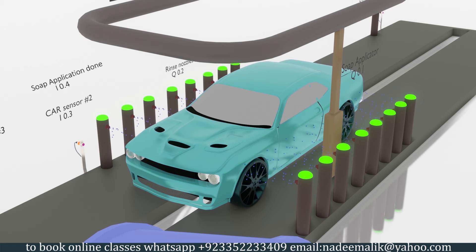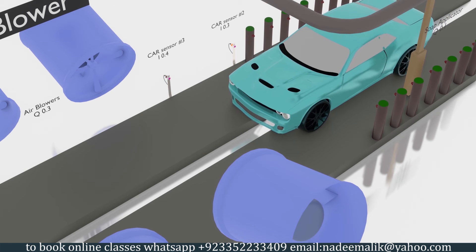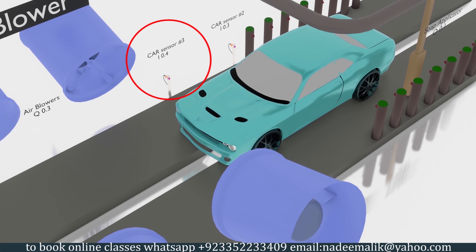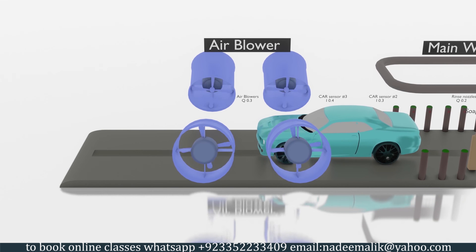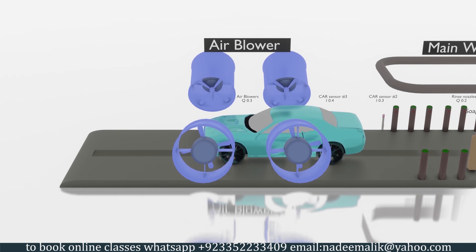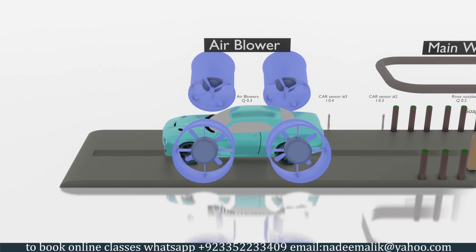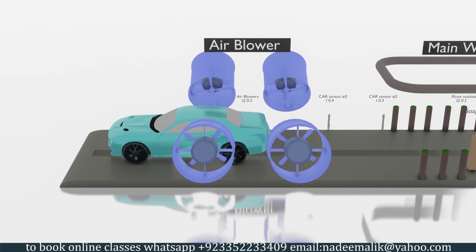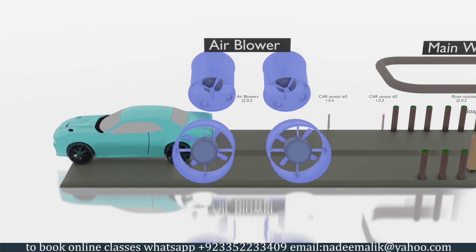Once the main wash cycle is over the driver will move the car forward. As soon as the car comes in front of sensor number 3 at I0.4, the PLC will turn on the air blower Q0.3 for 30 seconds to remove the water from the car body and dry it. After 30 seconds the air blower will turn off and the main washing cycle will be finished.